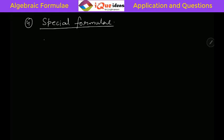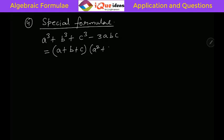Now we have to learn a special formula — I will call it the special formula. This is related to three items and it is a factorization formula. I will write the expression a cube plus b cube plus c cube minus 3abc. This can be factorized in one way as: a plus b plus c, into a square plus b square plus c square minus ab minus bc minus ca. This is one way of factorization.